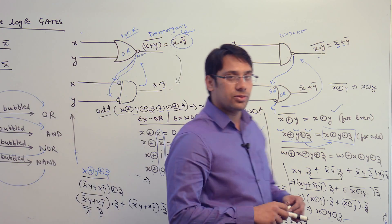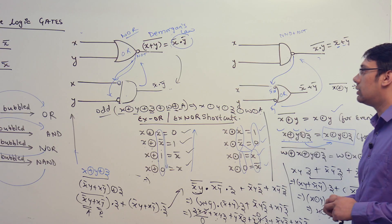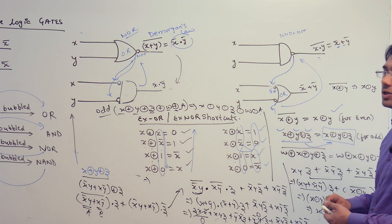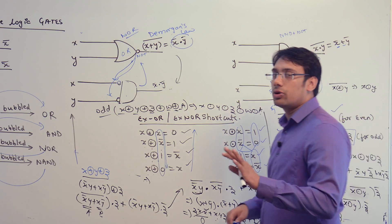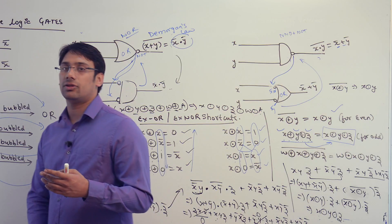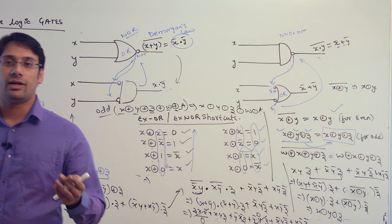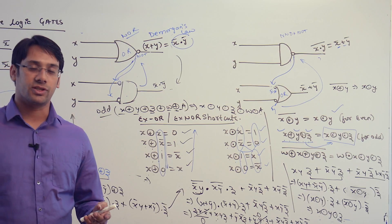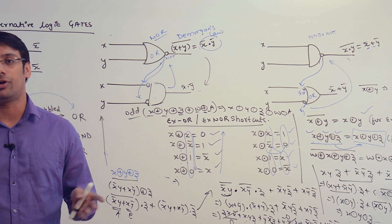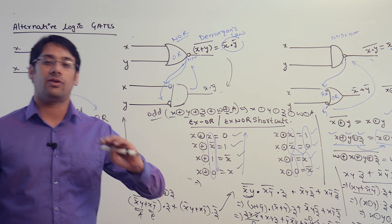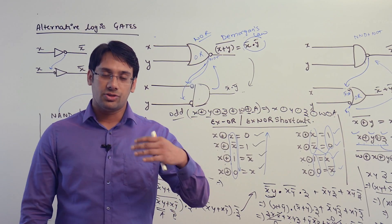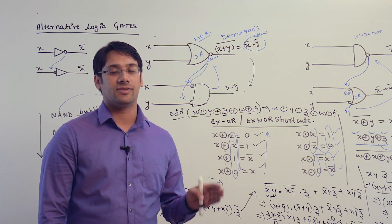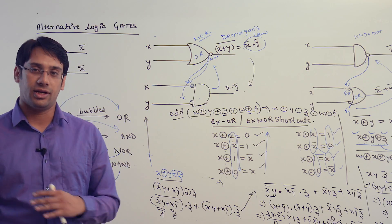Now let us look at how to implement SOP and POS expressions. If you implement an SOP expression, you use AND-OR realization; for a POS expression, you use OR-AND realization. You can then convert these realizations to implement the same function using just NAND gates or just NOR gates.